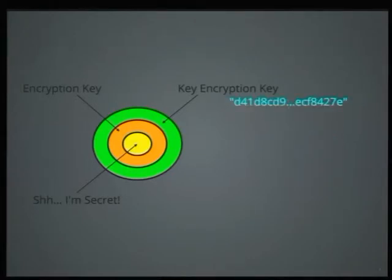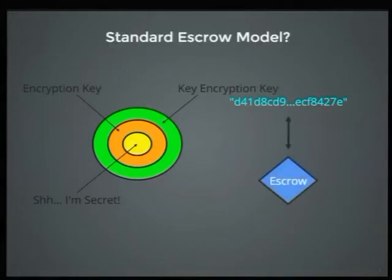One way we can try to automate this is to generate something that's cryptographically stronger — a cryptographically strong random key. We then store this in some remote system which we can fetch at a later time. This is pretty much the standard escrow model.